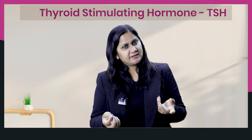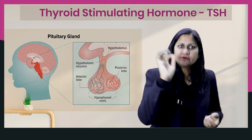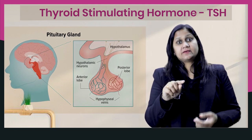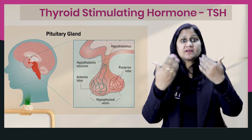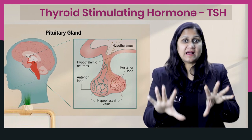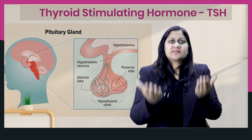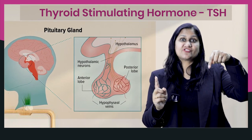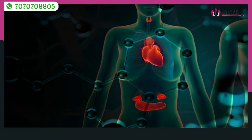The thyroid stimulating hormone is a hormone produced by the pituitary gland in the brain. It is used to stimulate the thyroid gland to produce thyroid hormone. When the thyroid hormone is reduced, the TSH rises to signal the thyroid gland to create more thyroid hormone. When thyroid hormone is produced sufficiently, TSH levels come back down.